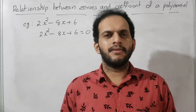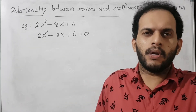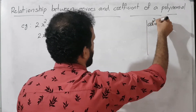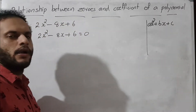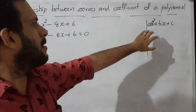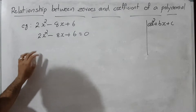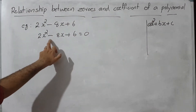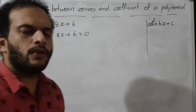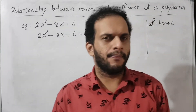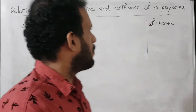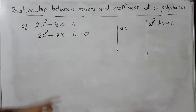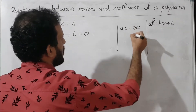The general form of a quadratic polynomial is ax² plus bx plus c. Comparing with our example, a equals 2, b equals minus 8, and c equals 6. For splitting the middle term, we find AC: AC equals 2 into 6 equals 12.